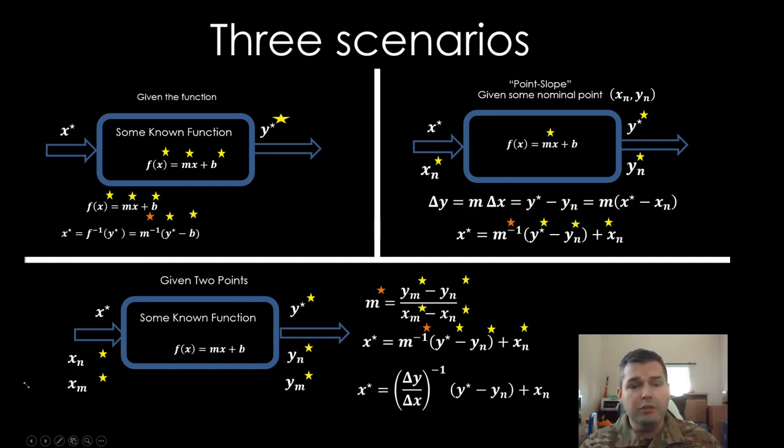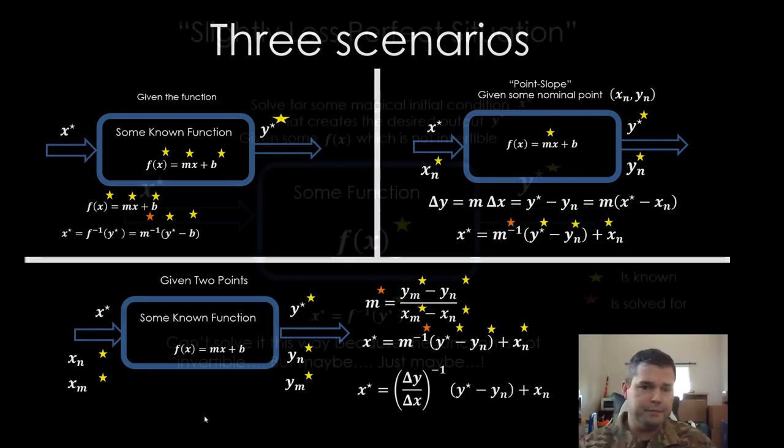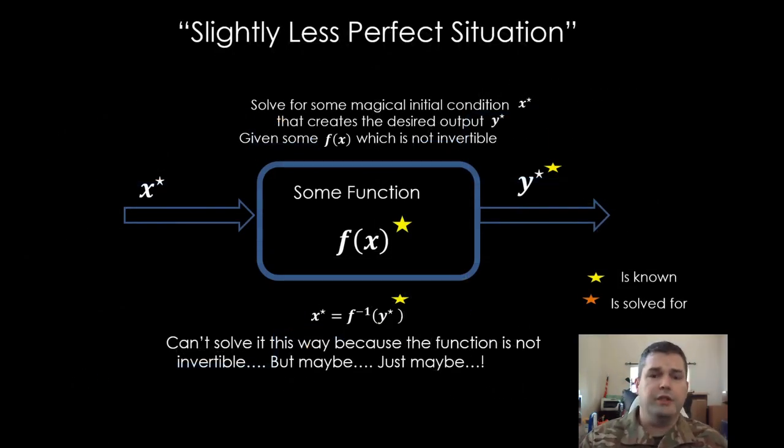Then they could also give you two points. A lot of us would take those two points and solve for M, then do the point slope evaluation. But realistically, we can solve directly for X star without solving for the intermediate M. All we need are those two points. This final version doesn't have anything to do with MX plus B. It's hidden away. We're just looking at the function evaluated at two points.